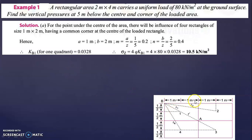For this single rectangle, the size is 1 meter by 2 meter, so a = 1 and b = 2 meter. For the rectangular shape formula, you need to find m and n. m is equal to a divided by z, where a = 1 meter and z = 5 meter (depth), so m = 0.2. And n is equal to b divided by z, where b = 2 and z = 5, so n = 0.4.